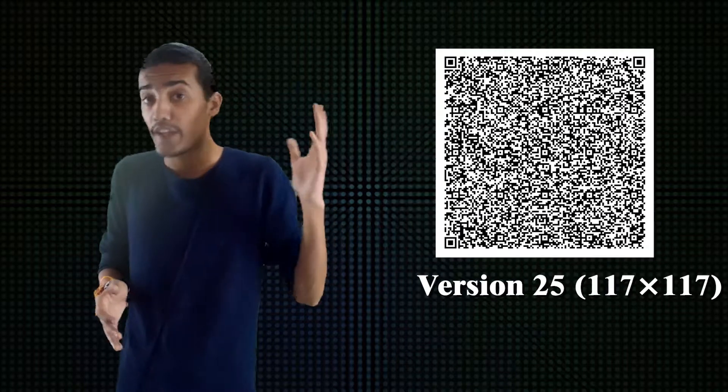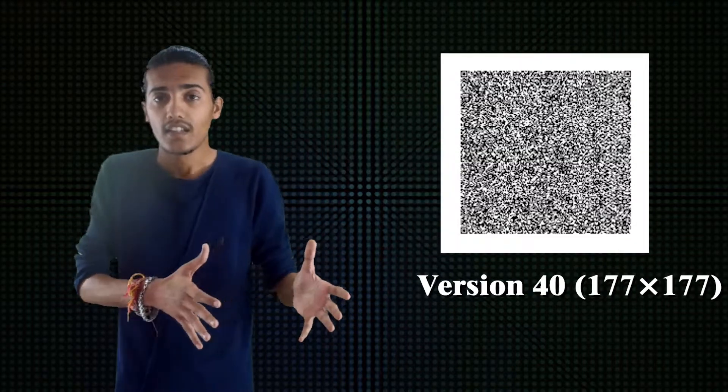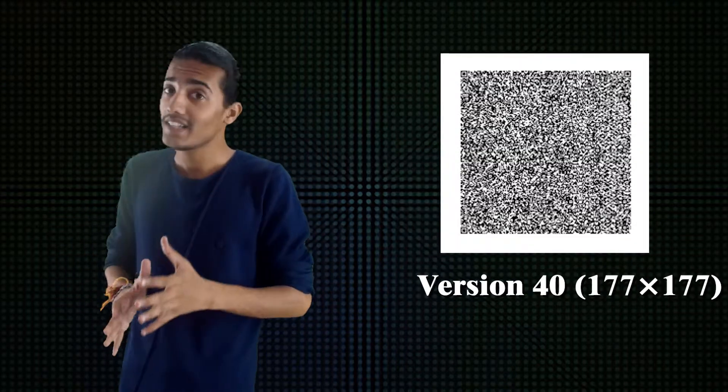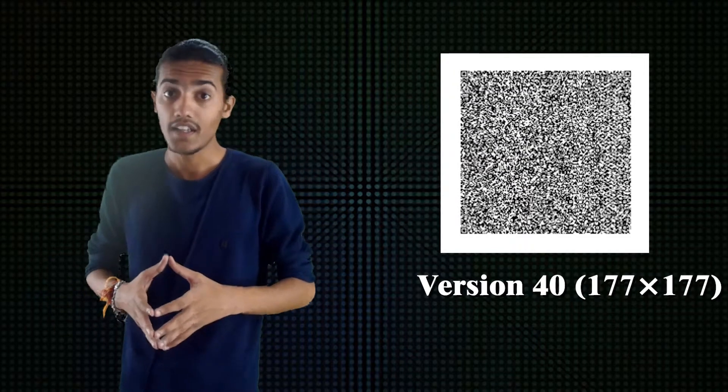So how does a QR code actually work? There are multiple versions of QR code — V1, V2, V3, V4, V5, all the way up to V25 and V40. You can clearly see that as the version increases, the amount of data that can be stored also increases. Even V40 follows the same structure but stores the maximum data.